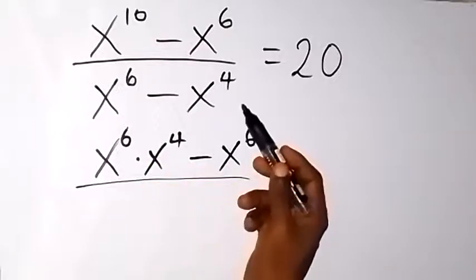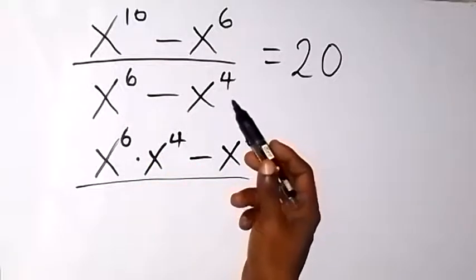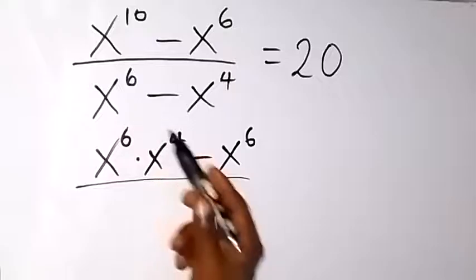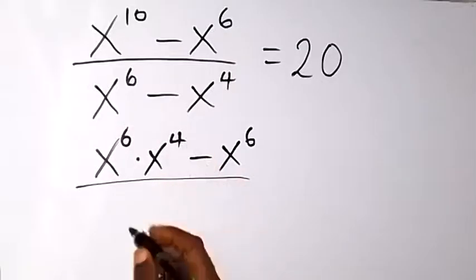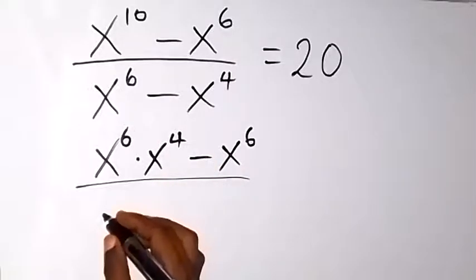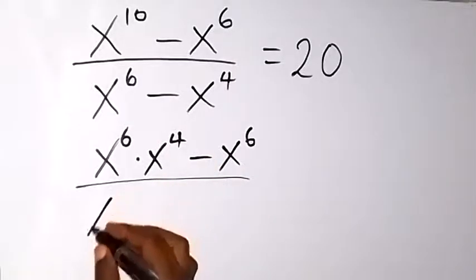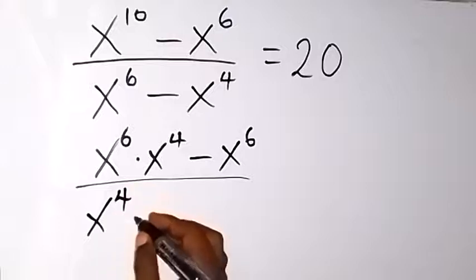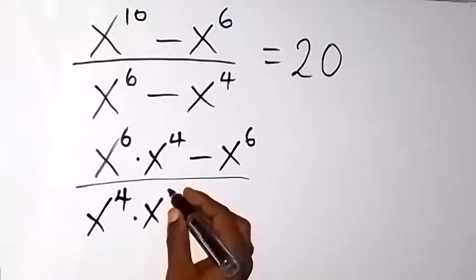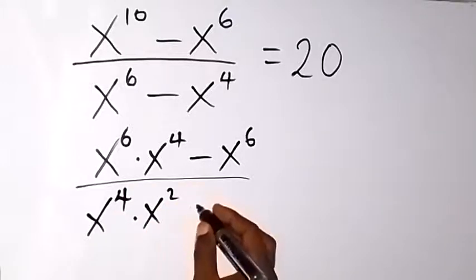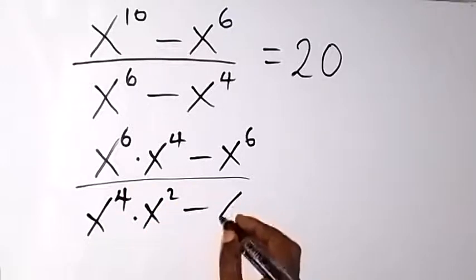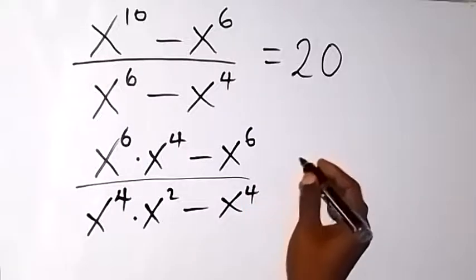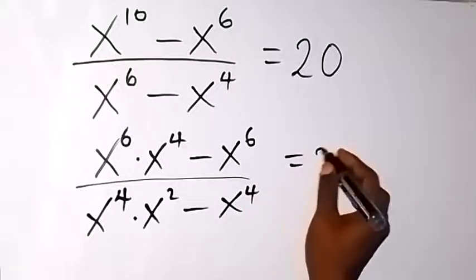In the denominator, we can separate x^4 and break the exponent as 4 + 2. So the denominator is written as x^4 multiplied by x^2 minus x^4, and this equals 20.